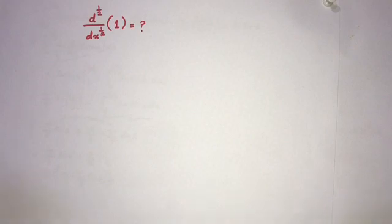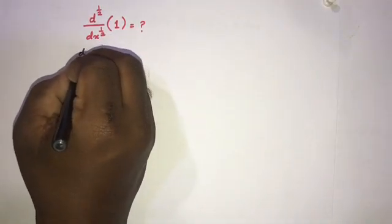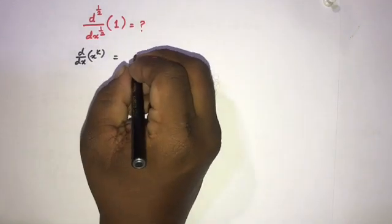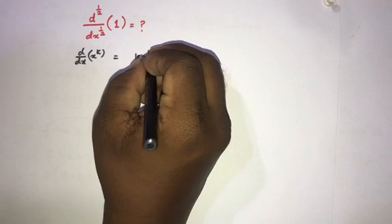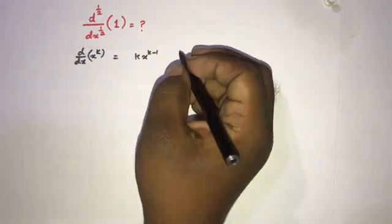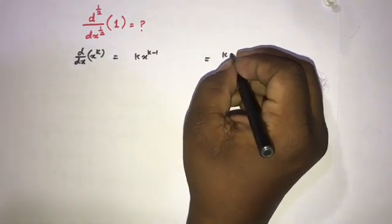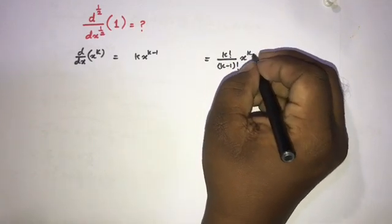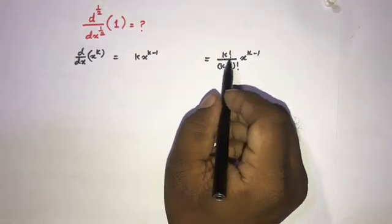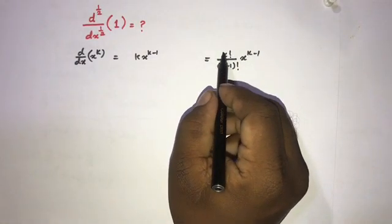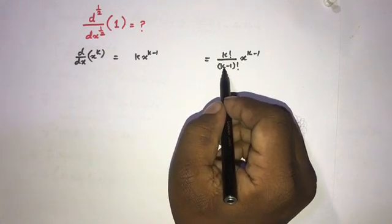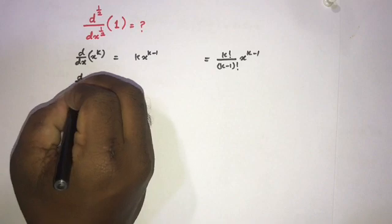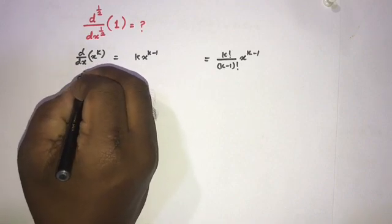First, I am going to take the derivative of x to the k. We know the derivative of x to the k is equal to k times x to the k minus 1. This is traditional differentiation. We can write this as k factorial over k minus 1 factorial times x to the k minus 1. Now look carefully: k factorial equals k times k minus 1 factorial, so k minus 1 factorial cancels and we get k.